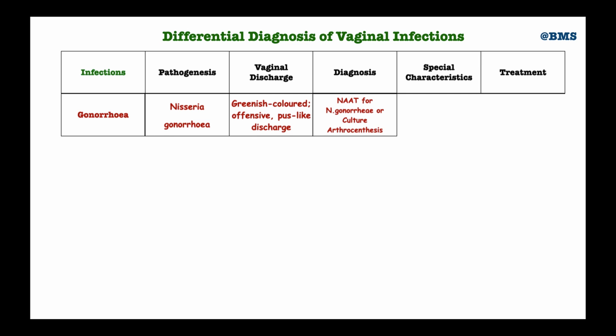The NAAT is the recommended first-best choice for Neisseria gonorrhoeae. We may also do culture to isolate the bacteria using what we call the Thayer-Martin agar. We can also do arthrocentesis, because gonorrhea can cause disseminated gonococcal infection that spreads to the joints. We take synovial fluid and analyze it to find Neisseria gonorrhoeae — that is why we perform arthrocentesis for these women.